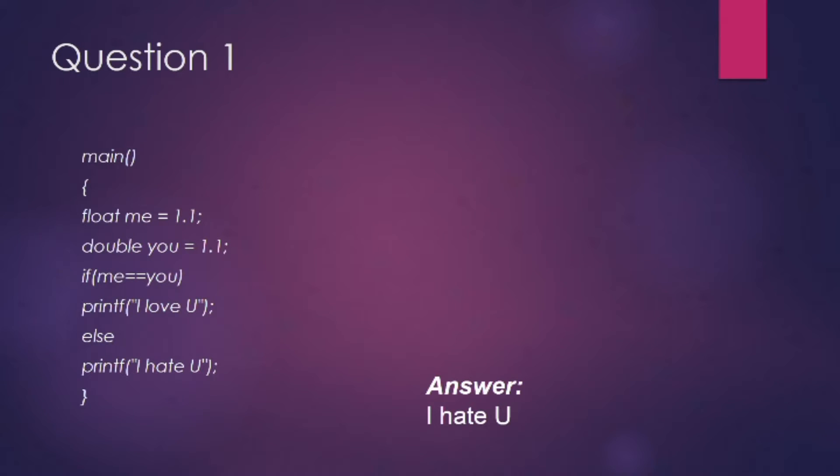You can see the first question on your screen. Here, float me is assigned a value of 1.1, then you is also assigned a value of 1.1. The next statement: if me equals you, then printf 'I love you', else printf 'I hate you.' You will think that me and you are exactly the same, so the answer should be 'I love you,' but that is not the case here. The answer is 'I hate you.'